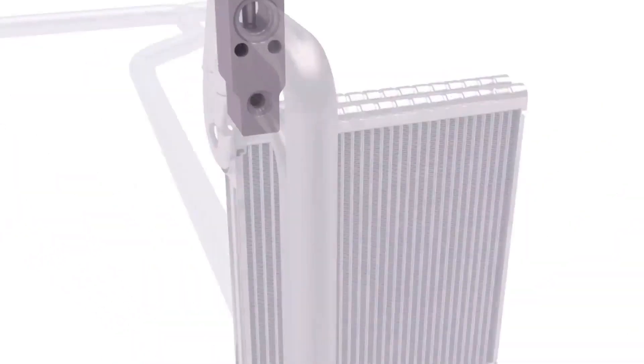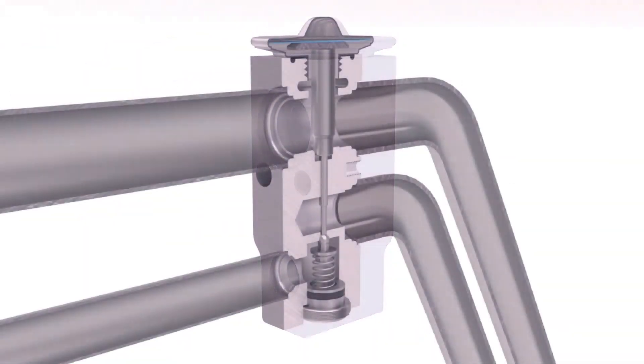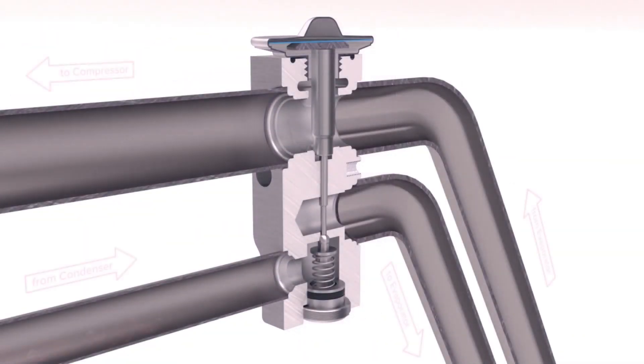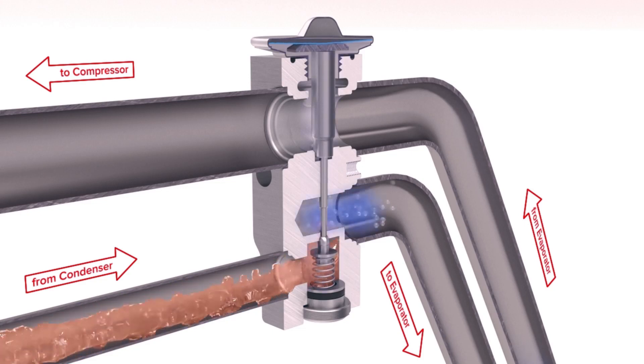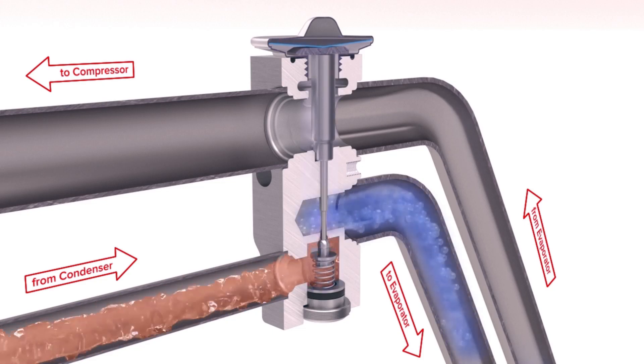Next, the cooled liquid refrigerant flows to the expansion valve, where the high pressure of the refrigerant forces it through a small orifice or hole, and this has the effect of injecting the refrigerant from the orifice as a mist that is then able to expand.